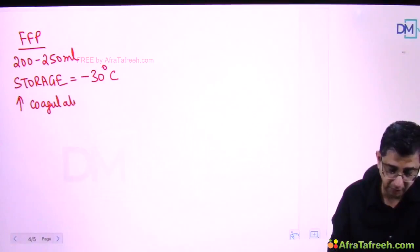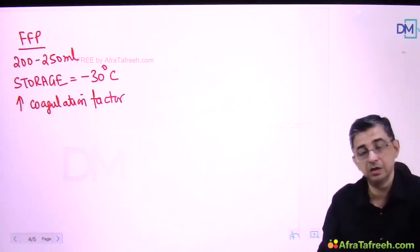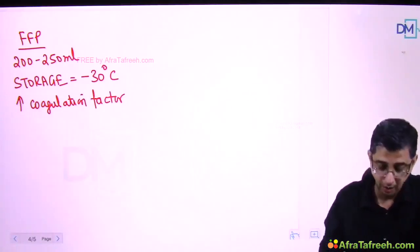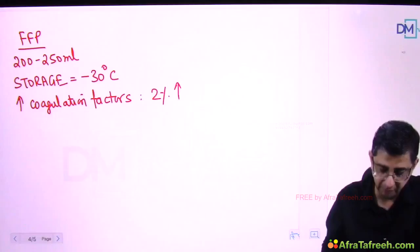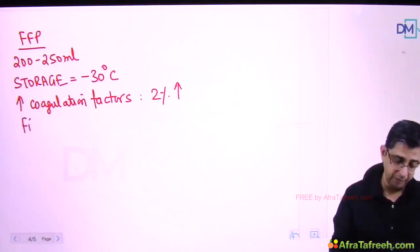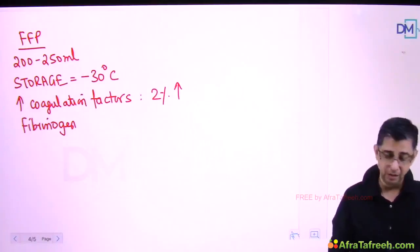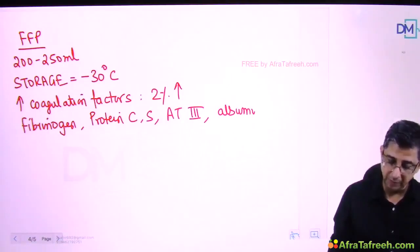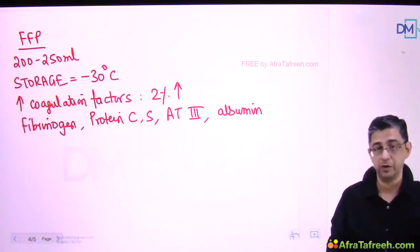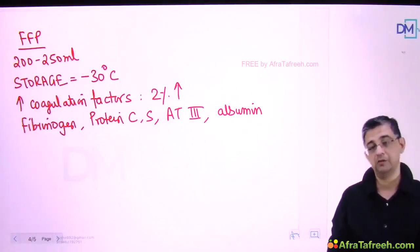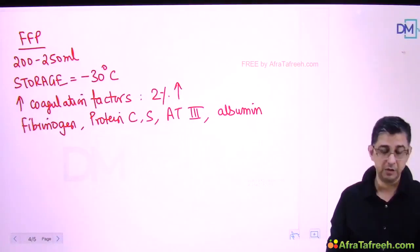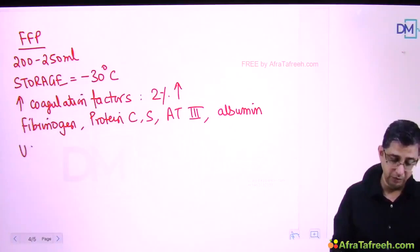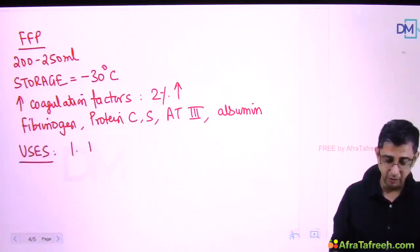Fresh frozen plasma is the richest source of clotting factors. It increases coagulation factor levels in the body and is preferred for any condition where coagulopathy is present. Coagulation factors increase by two percentage points when fresh frozen plasma is given. It provides fibrinogen - explaining its importance in DIC - and also provides protein C, protein S, antithrombin 3, and albumin. In burns after 24 hours, fresh frozen plasma can be given to the patient.